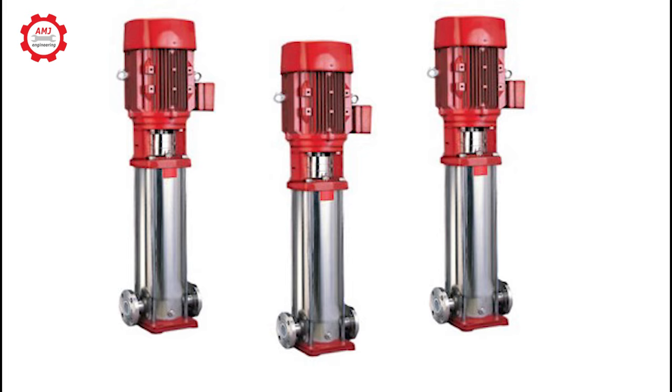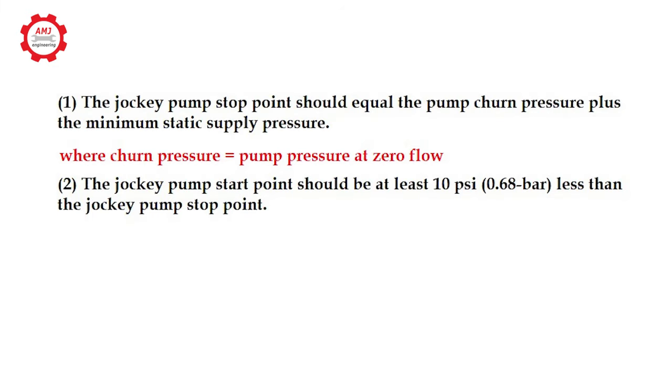Based on fire pump start and stop settings from NFPA 20, which states as follows: 1. The jockey pump stop point should equal the pump churn pressure plus the minimum static supply pressure. 2. The jockey pump start point should be at least 10 psi less than the jockey pump stop point.